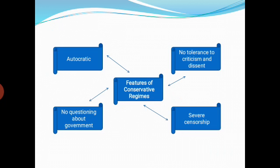The next topic is the features of conservatism regimes — the conservative type of government. First, autocratic rule is the most important feature. Autocratic means a bossy way of ordering; they have absolute sovereignty. Second, there is no tolerance to criticism and dissent — under the conservative regime type of government, there is no space for criticism or dissent. Third, there is no questioning about the government — whatever decisions and steps were taken by the conservative government, there is no questioning allowed.